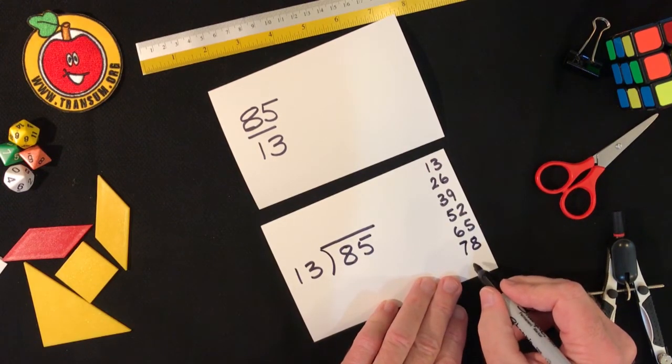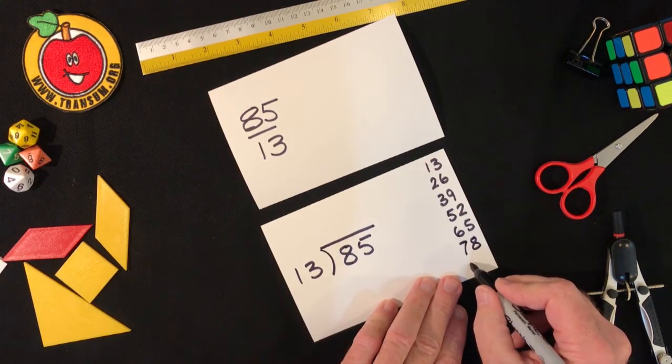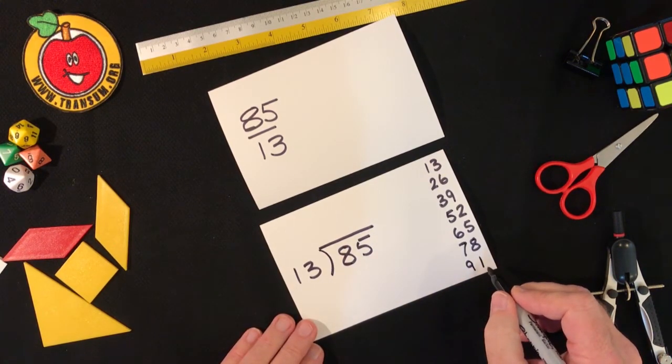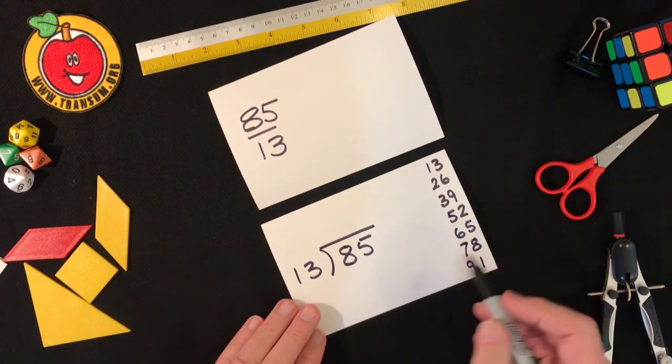I'll add thirteen onto seventy-eight to get ninety-one. Right I think that's as far as I need to go in the thirteen times table. Now I can do this long division.